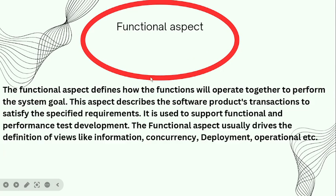Next is functional aspects. It usually drives the definition of views like information, concurrency, deployment, and operational. The functional aspect defines how functions will operate to perform system goals. This aspect describes the software product's transactions to satisfy the specified requirements, and it is used to support functional and performance test development.